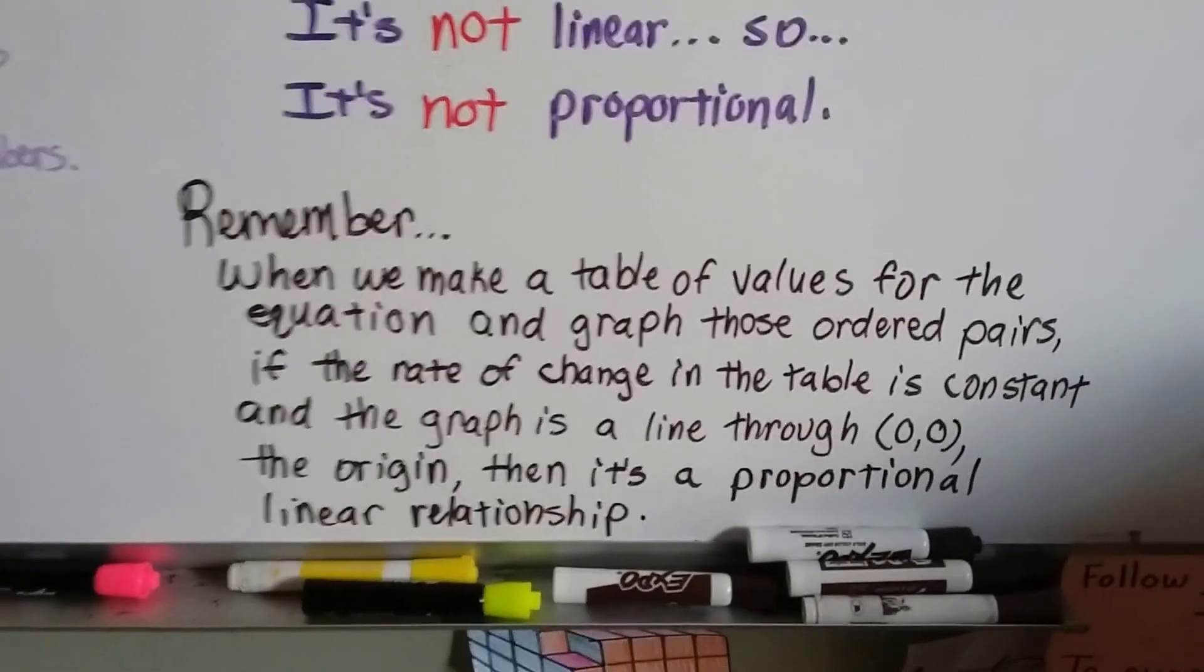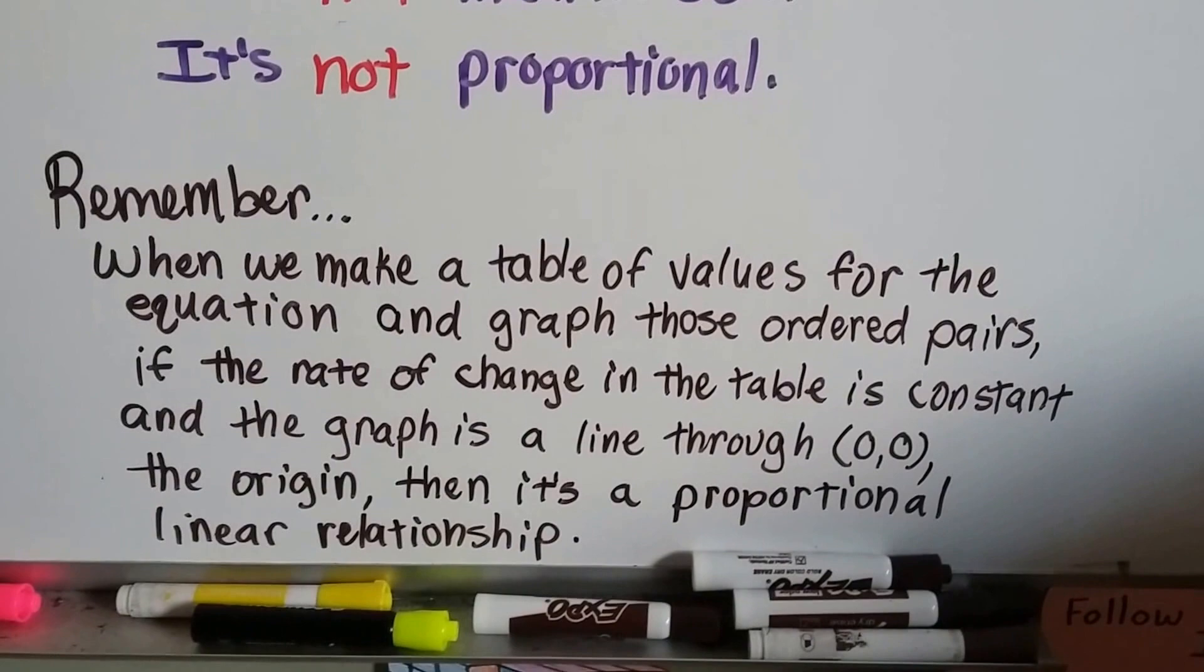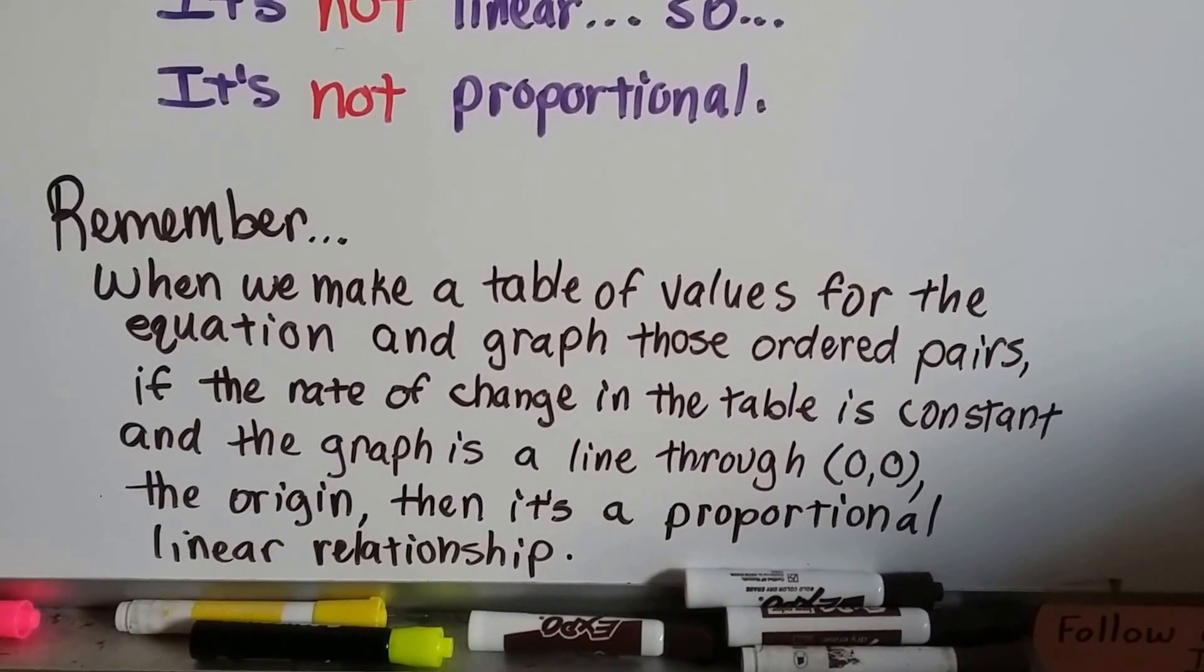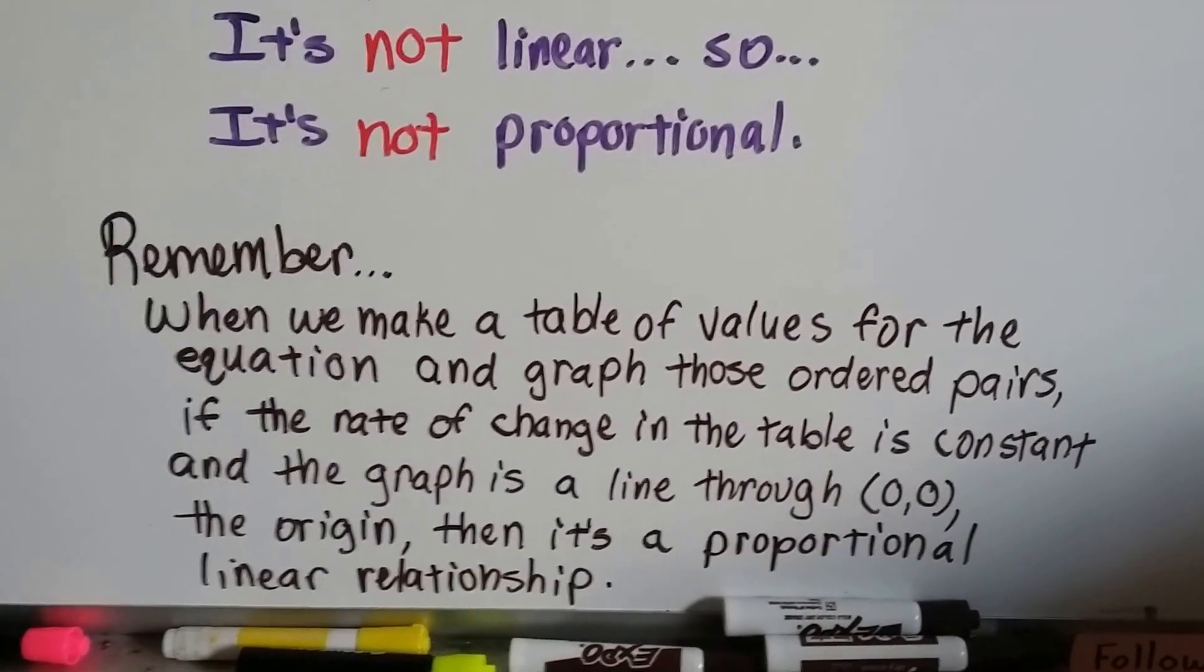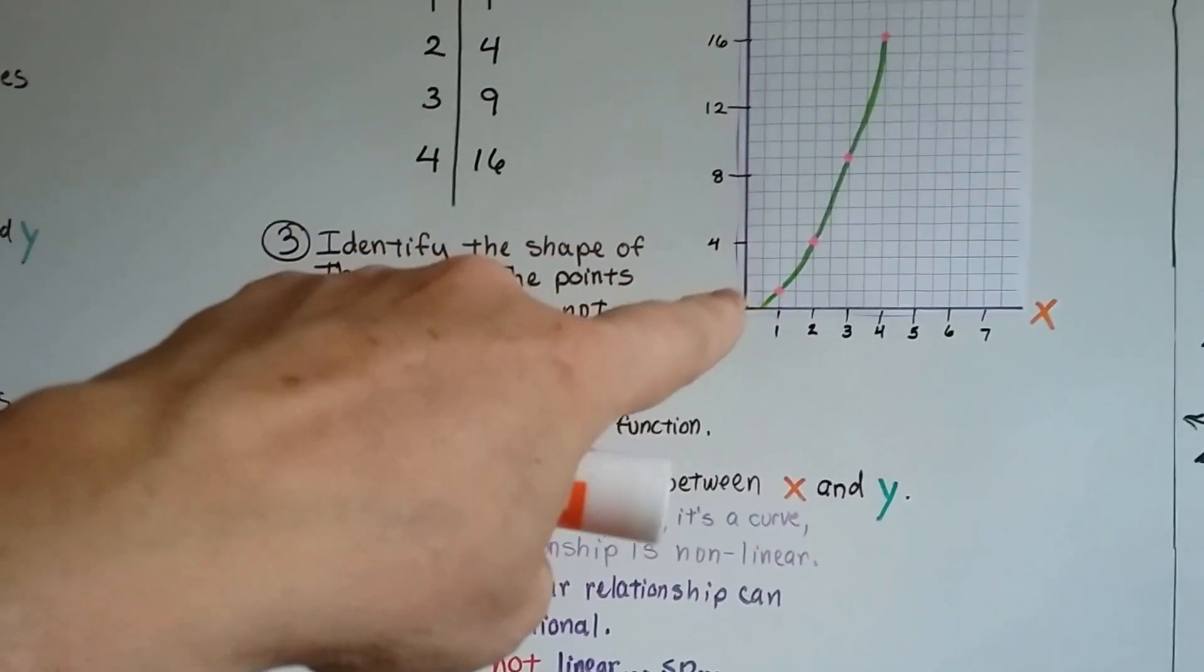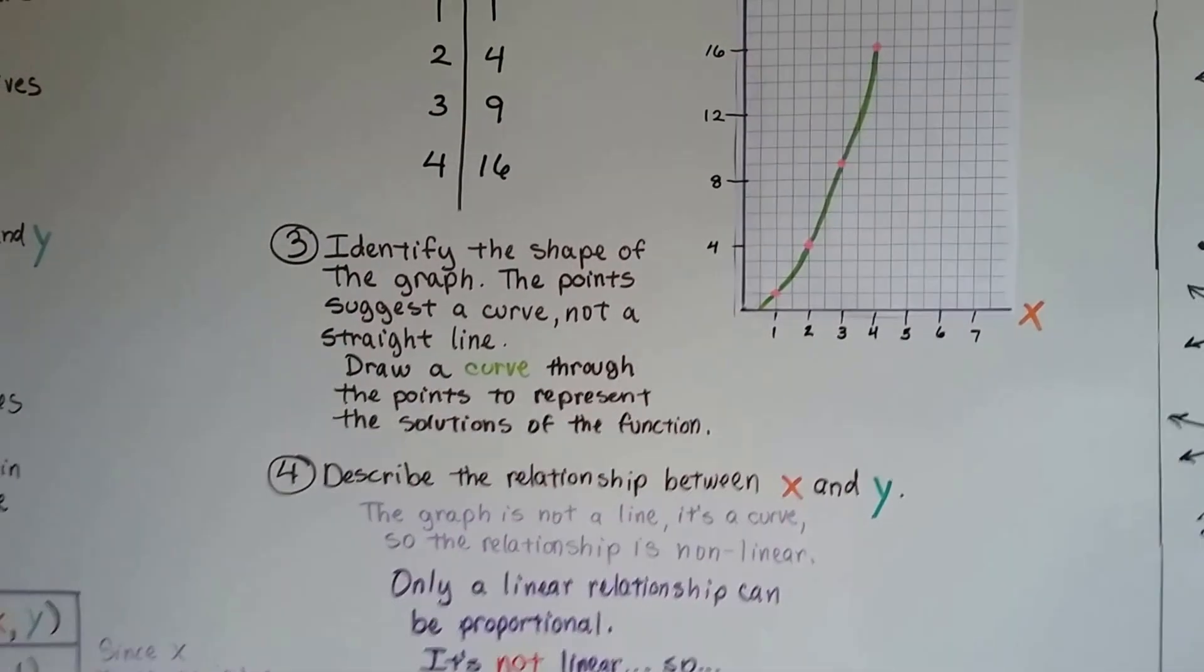So remember, when we make a table of values for an equation and graph those ordered pairs, if the rate of change in the table is constant and the graph is a line through zero, zero, the origin, then it's proportional, linear relationship. This one wasn't. It wasn't linear and it wasn't proportional. It didn't make a straight line and it didn't go through the origin zero, zero, did it?